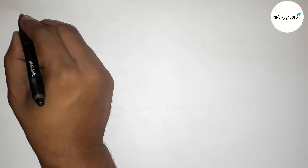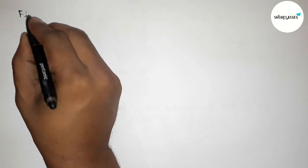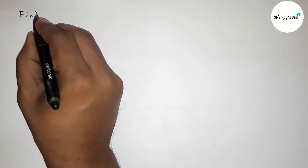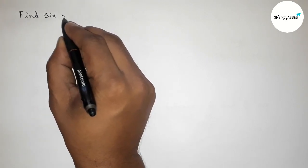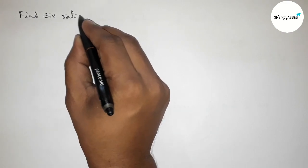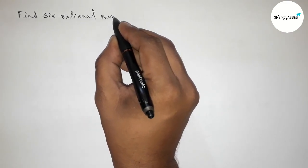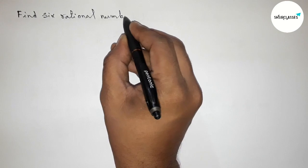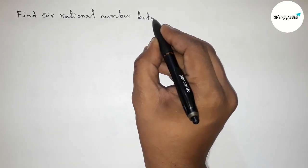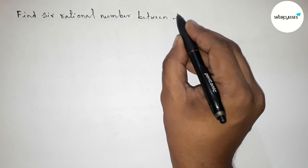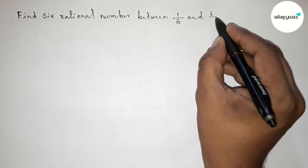Hi everyone, welcome to SI Share Classes. Today in this video we have to find six rational numbers between 1 by 6 and 1 by 7 in an easy way. Please watch the video till the end. So let's start the video.